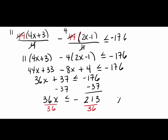So we have x less than or equal to negative 213 over 36, but we should reduce. Since 3 goes into each of these numbers: 3 goes into 213 seventy-one times, and 3 goes into 36 twelve times, giving us negative 71 over 12. A quick check: 12 has prime factors 2 and 3. Neither 2 nor 3 goes into 71, so the fraction is completely reduced.